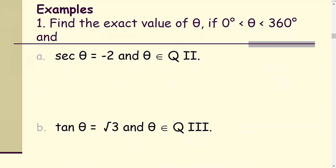Examples. We're going to find the exact value of an angle theta. Exact value of theta means it will be in the form of 30 degrees, 60 degrees, 90 degrees, 45 degrees, or multiples of them, as long as theta is between 0 degrees and 360 degrees.